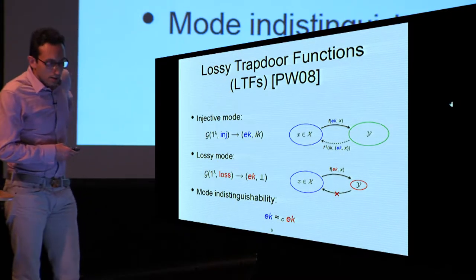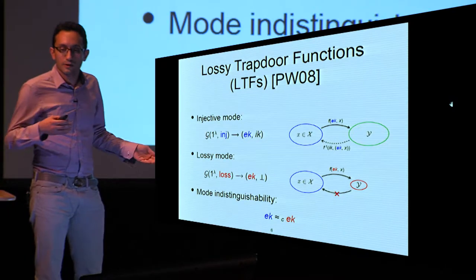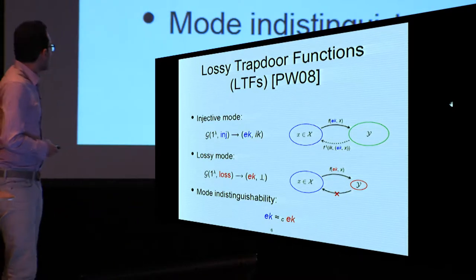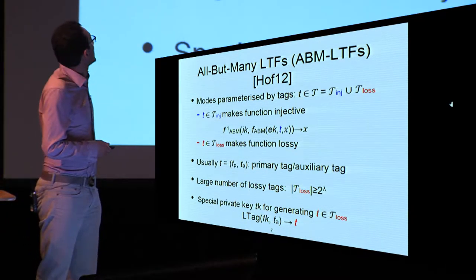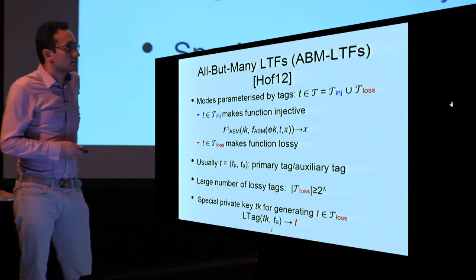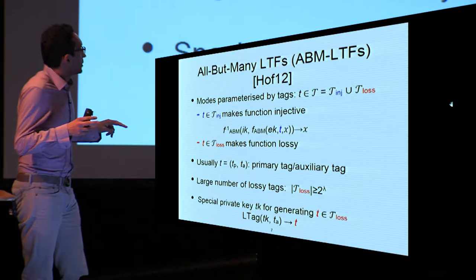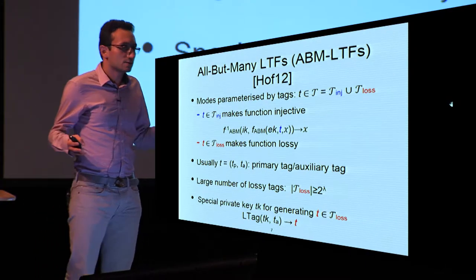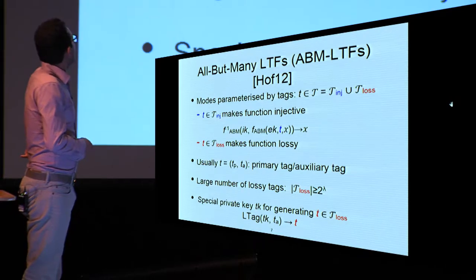In the lossy mode, although you are given another evaluation key which is computationally indistinguishable from the evaluation key in the injective mode, you cannot recover x from the output of the function. As for All-But-Many Lossy Trapdoor Functions (ABMLTFs), introduced first by Hoff-Heinz in 2012, the modes are parameterized by tags. The whole set of tags is partitioned into two sets: the lossy set and the injective set.